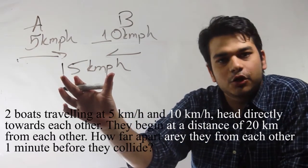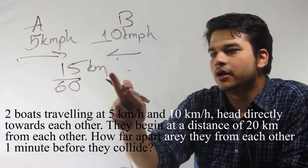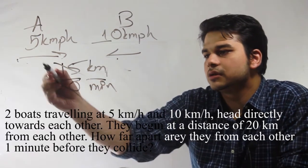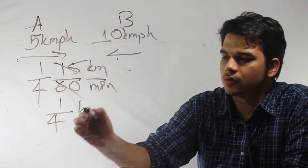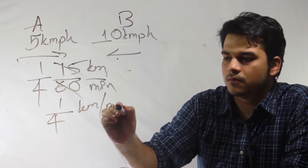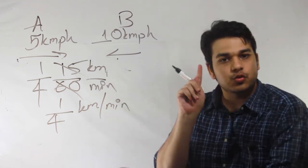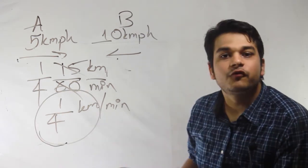If it travels 15 km in 1 hour or 60 minutes, that means it travels 1 by 4th kilometer per minute. That means just 1 minute before they actually collide, they will be 1 fourth of a kilometer apart.